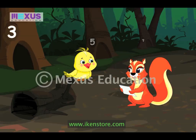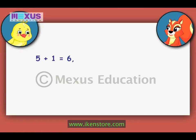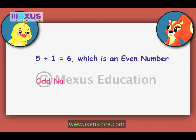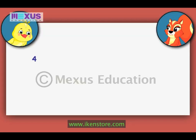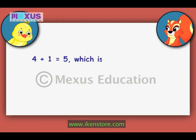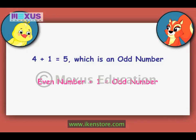Just answer these questions. Take the odd number 5. Now add 1 to it. What do you get, Amber? 5 plus 1 is 6 — it is an even number. So odd number plus 1 is an even number. Now take the even number 4. Add 1 to this and we get 5, which is an odd number. That means even number plus 1 is an odd number. So in this way we can easily form even and odd numbers.